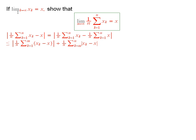I want to show that if the limit of a sequence exists and equals x, then the limit of the average of the first n terms also converges to x.